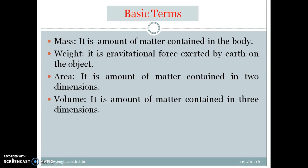The next important term is area. It is the most frequent term that occurs in our calculations. When we say the area of a circle is pi by 4 D squared, area of a rectangle is b into d, and area of a square is side squared — what does this exactly mean? It is nothing but the amount of space contained along two dimensions. It will be the product of two length dimensions. So its unit will be mm squared, cm squared, or meter squared.